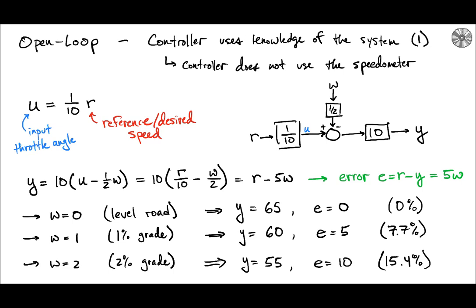So if we insert this definition of u into our expression for the resulting speed, so y is now if we substitute it into the expression 10 times u minus half w, then we get this expression that has r and w inside and we find that the resulting speed is equal to r, our reference or desired speed, minus 5w. And so again we're really interested in understanding how different our actual speed y is compared to our reference speed r. And so we define an error that's just r minus y. And using what we just defined we can see that that is equal to 5w.